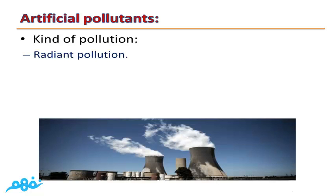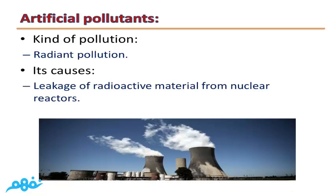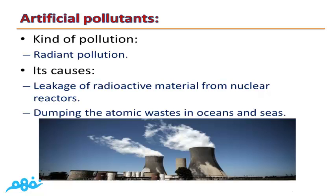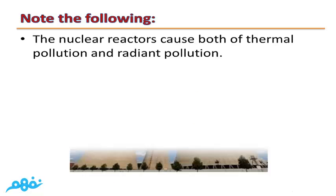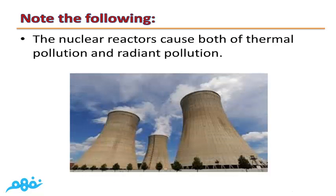The final type of artificial pollution is radiant pollution. Its causes: leakage of radioactive materials from nuclear reactors, and dumping of atomic wastes in oceans and seas. Note: nuclear reactors cause both thermal and radiant pollution.